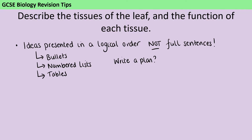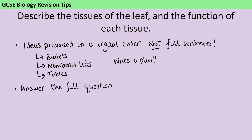My other advice is to be really careful that you are answering the full question. Very often these six-mark questions are what we call level marked, and so in order to get the highest marks, you don't just need to say six true things — you need to actually be making sure that you're answering all parts of the question. Here we've definitely got a two-part question: we need to both describe the tissues of the leaf and talk about their functions.